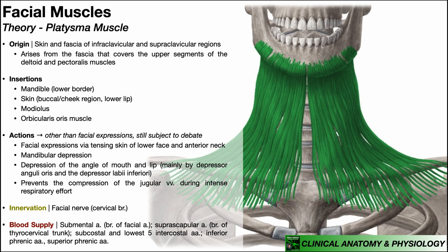In this video, we're going to be discussing the anatomy and physiology of an often neglected muscle shown in the image in green, and that is the platysma muscle. We'll be talking about its origin, insertions, actions, etc. The origin is actually the inferior part of the muscle, down here inferior to the clavicles. The platysma originates from the skin and fascia of the infraclavicular and supraclavicular regions, and technically the muscle arises from the fascia that covers the upper segments of the deltoid and the pectoralis muscles.